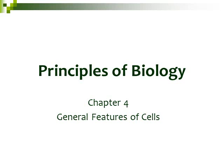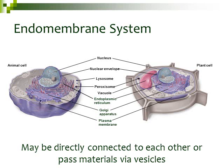This is part 4 of 5 on chapter 4, General Features of Cells. In this section, we're going to be looking at the endomembrane system. The endomembrane system consists of the organelles listed in the middle of the slide: the nucleus, the nuclear envelope, lysosomes, peroxisomes, a vacuole found in plant cells, the endoplasmic reticulum, the Golgi apparatus, and the plasma membrane.